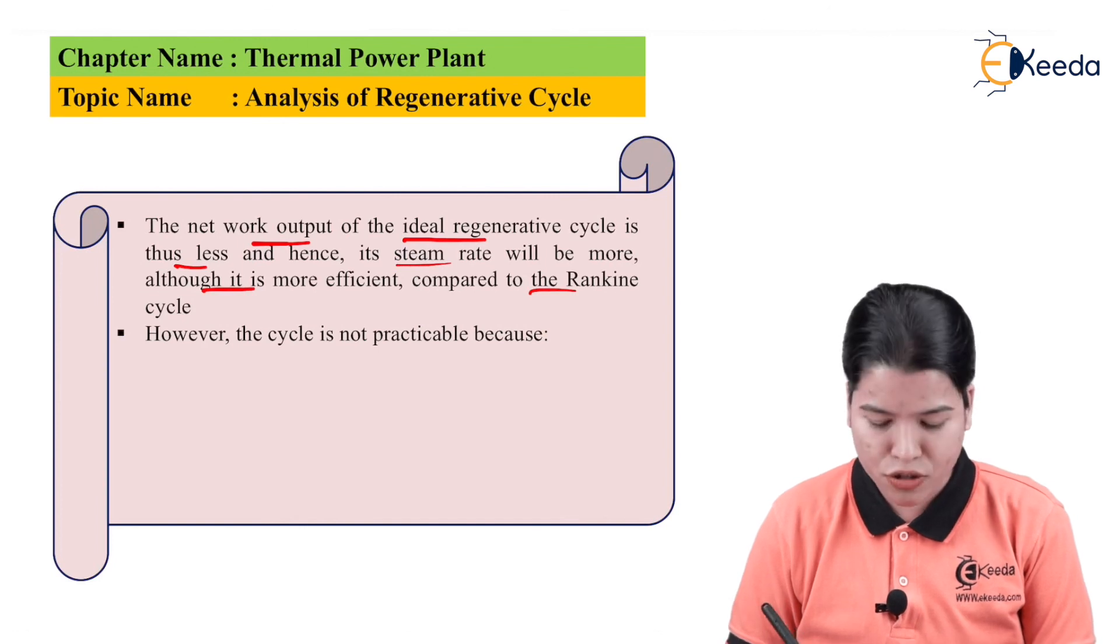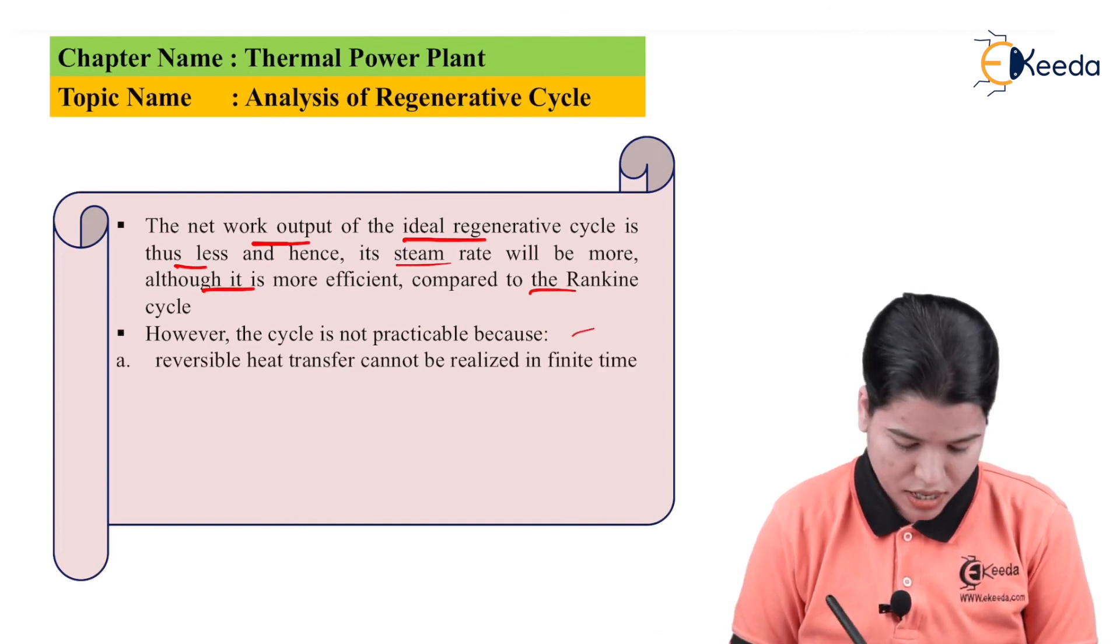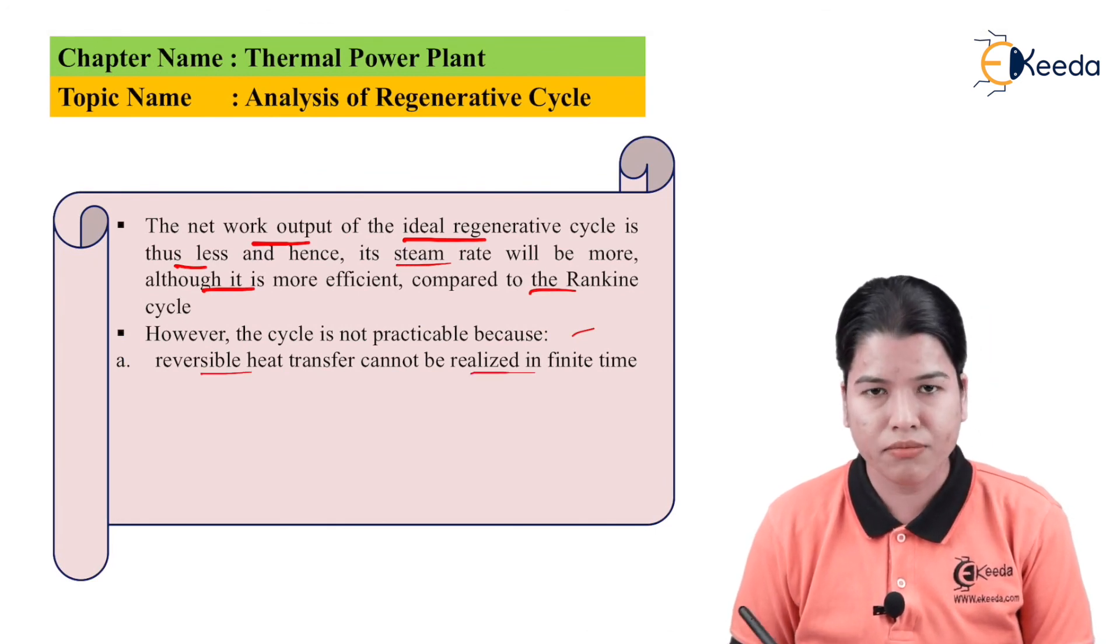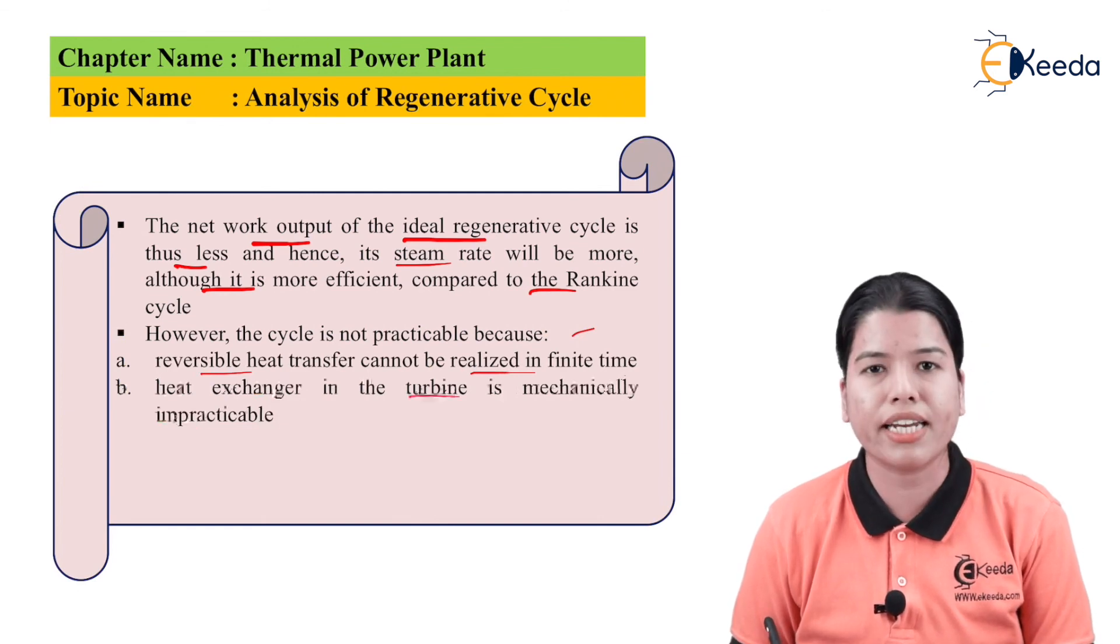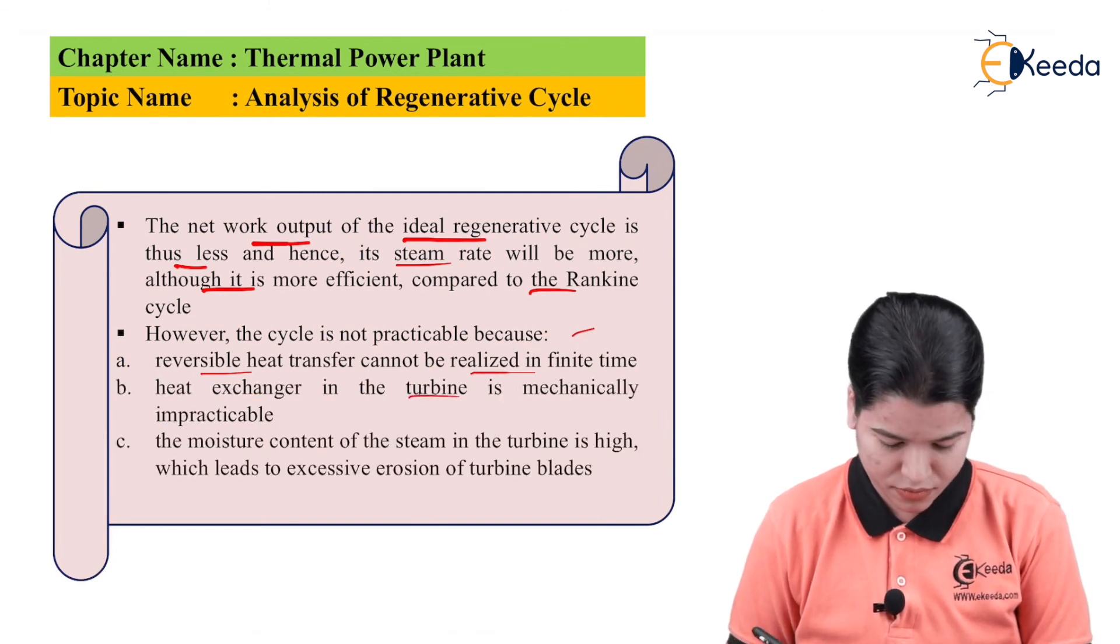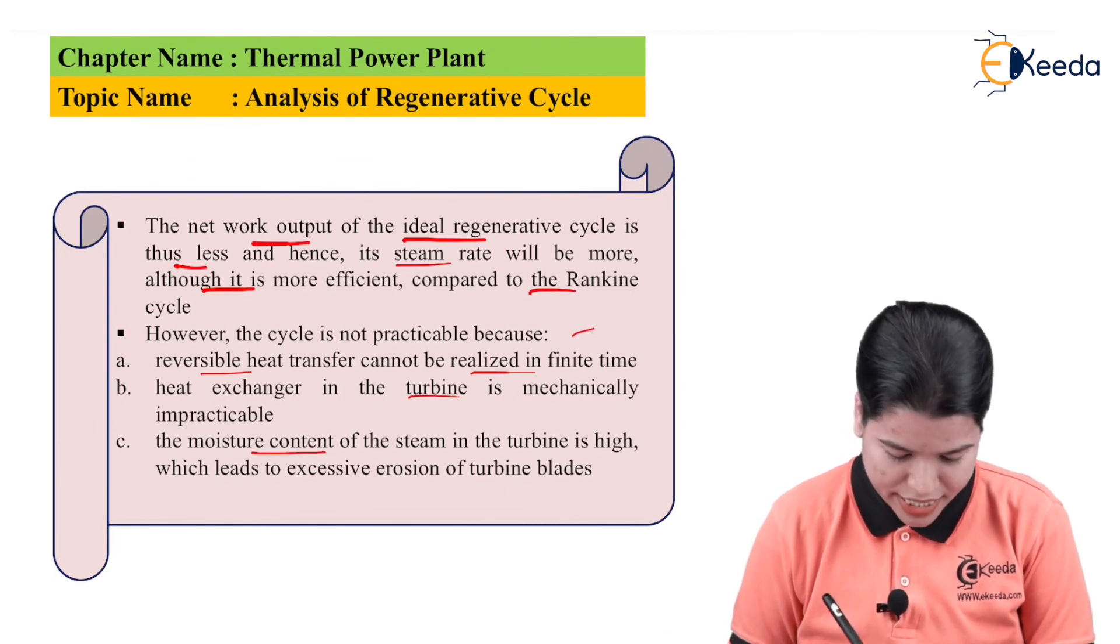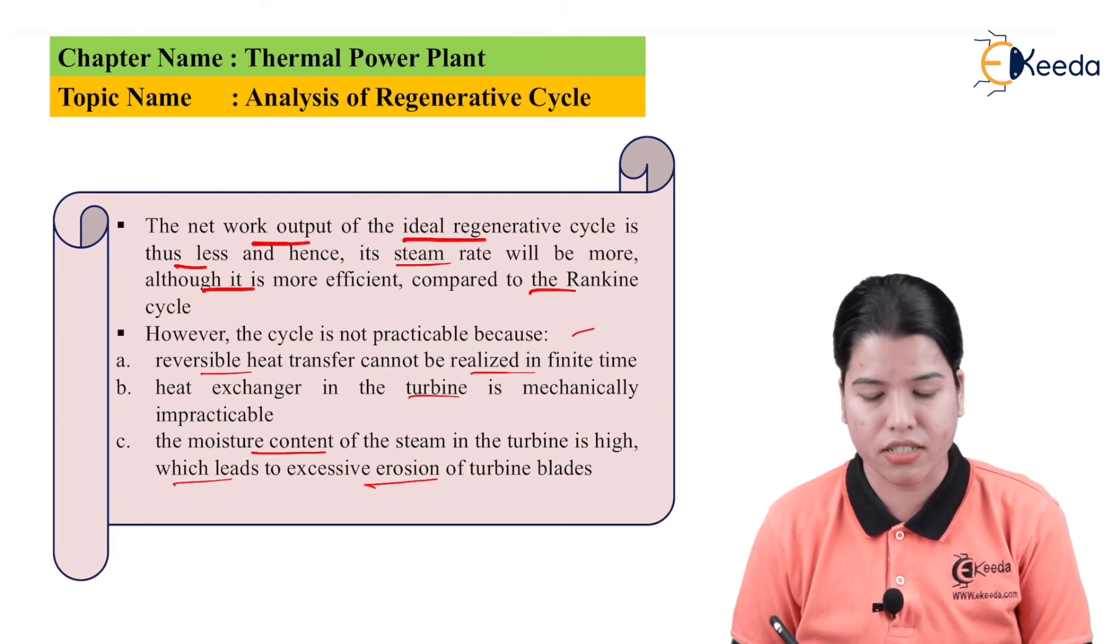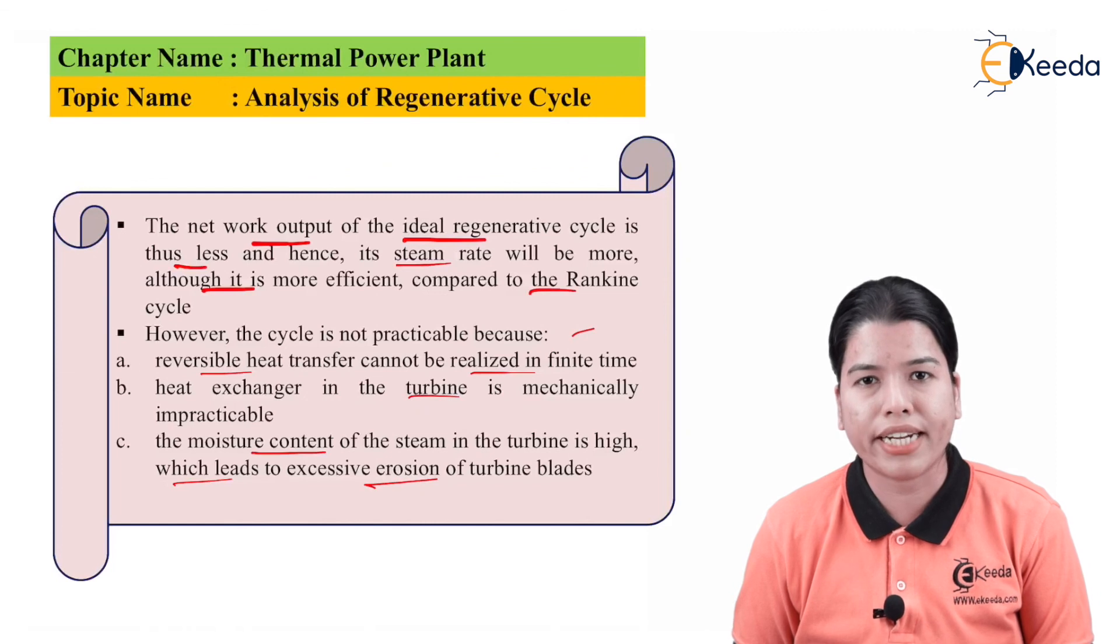However, this cycle is not practicable because: first, reversible heat transfer cannot be realized in a finite time; then the heat exchanger in the turbine is mechanically impracticable; also the moisture content of the steam in the turbine is high, which will lead to excessive erosion of the turbine blades. Because of these facts, the regenerative cycle is not practically possible.